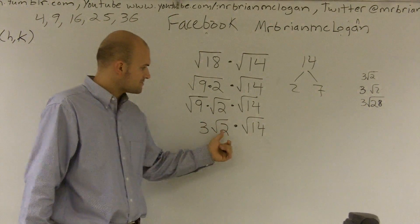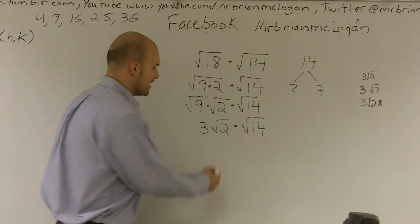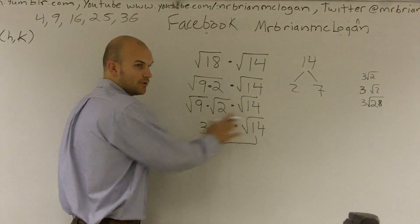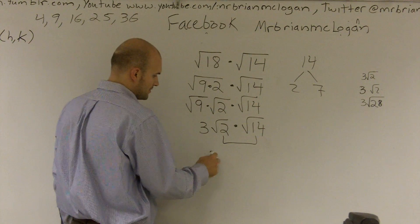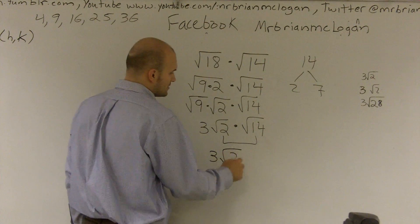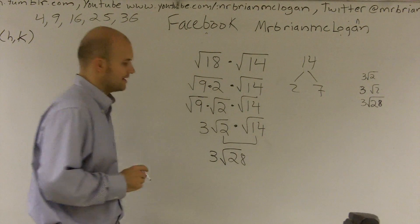So now I have 3 times radical 2 times radical 14. Well, I can multiply these two since I'm taking the radical of both of them. So I have 3 times the square root of 2 times 14 is 28.